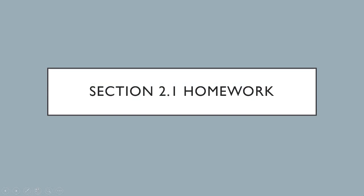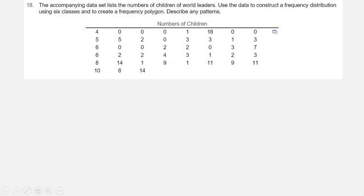We're looking at homework from section 2.1. This is question number 18. The accompanying data set lists the number of children of world leaders. Use the data to construct a frequency distribution using six classes and to create a frequency polygon. Describe any patterns.